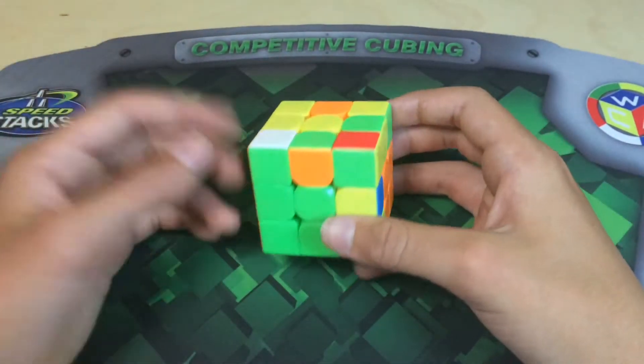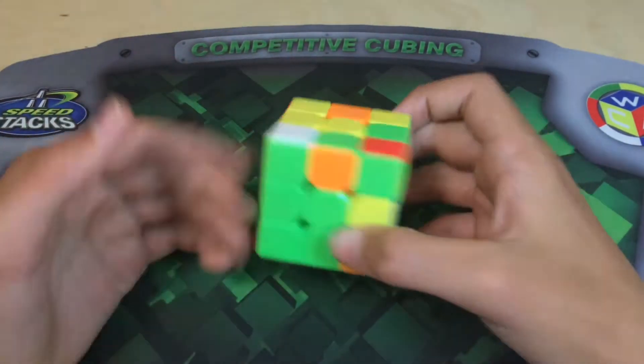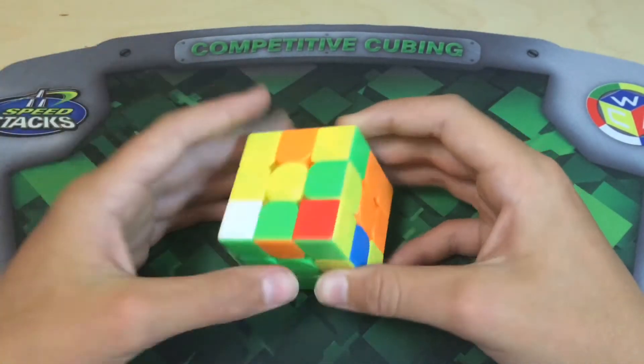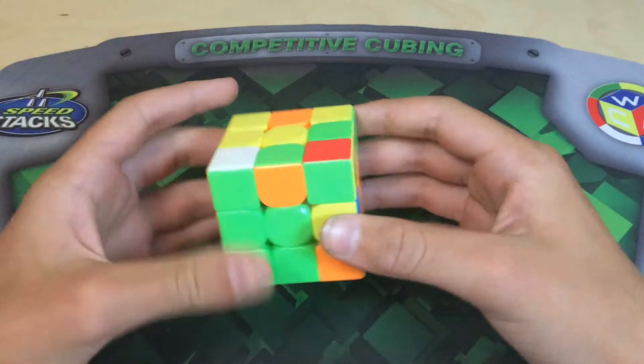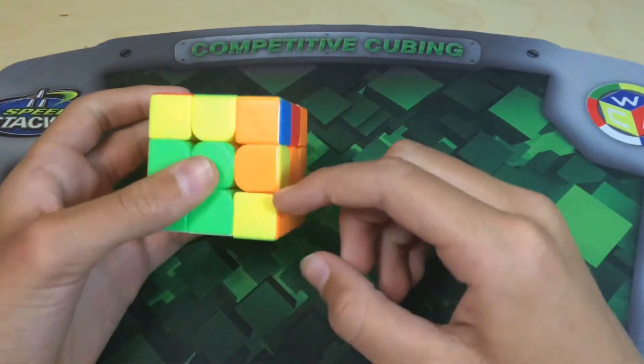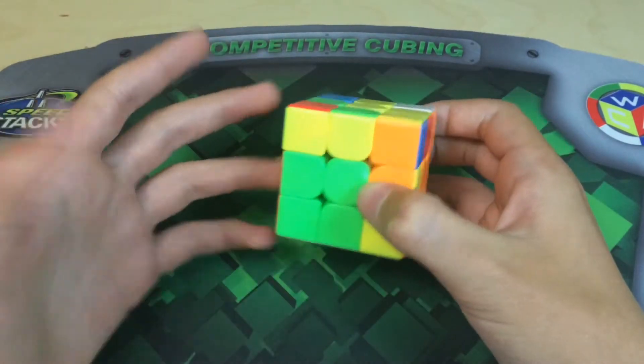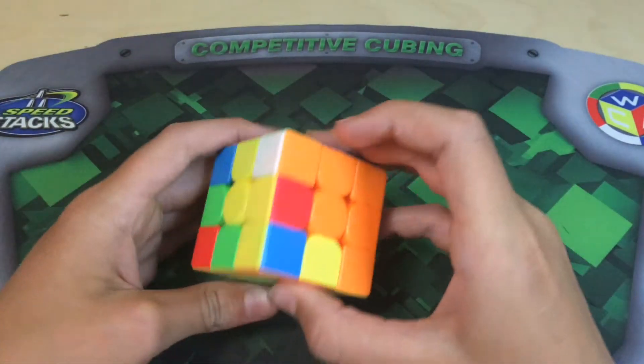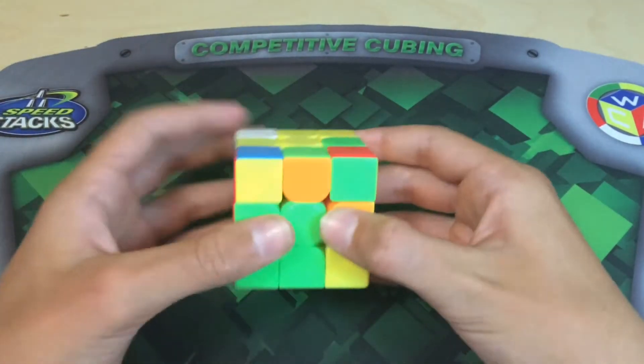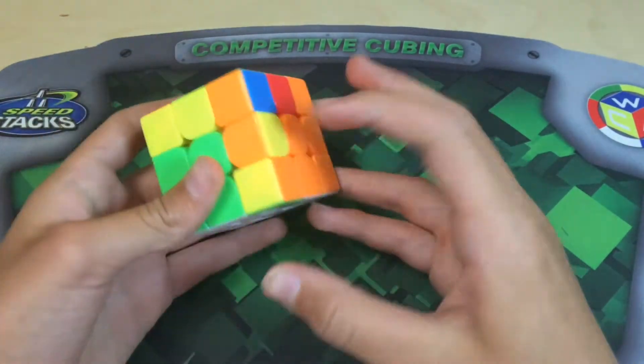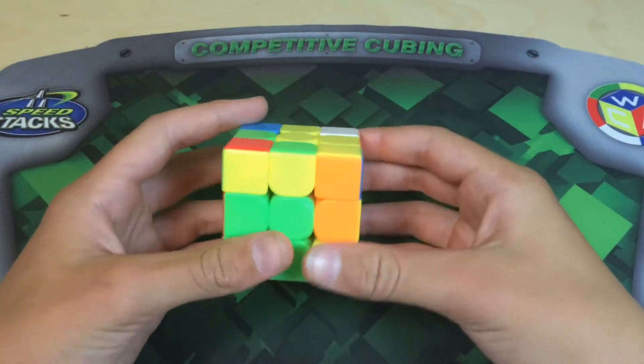You can also have the case where you have two good edges and two bad edges. And what we do for this one is different from what we did for three edges. So what we do is we take one of the bad edges and we insert into the slot just like we did for three edges. But instead of rotating, what we're going to do is we're also going to orient the other bad edge. So we want to find that other bad edge and we want to put it right here in this UF position with the other bad edge in the slot.